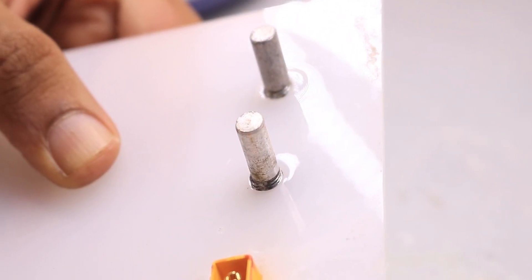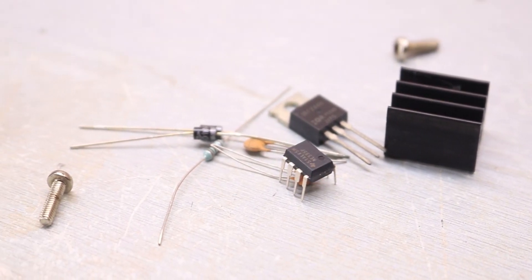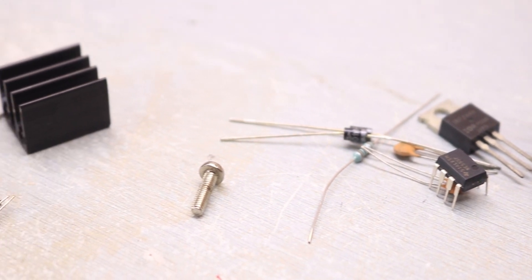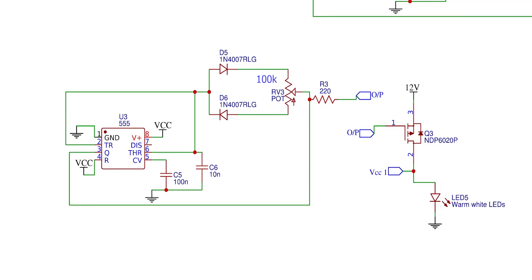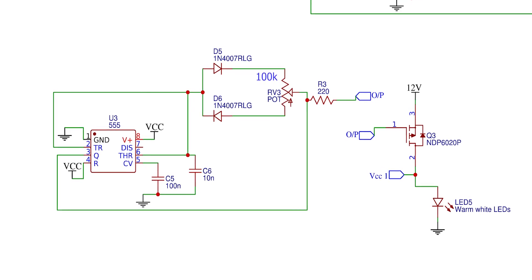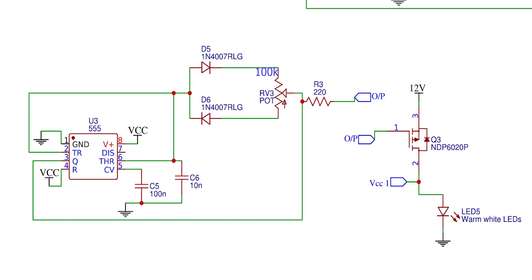After which I mounted the 100 kilo ohm potentiometers as shown over here. Now it's time to build the dimming circuit, for which I used IC 555 timer along with a MOSFET and few capacitors and a diode. If you recall this circuit, it's the same circuit I have mentioned in my previous video. If you want to learn more check out that video.